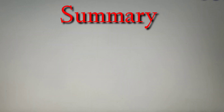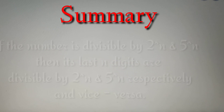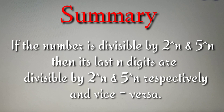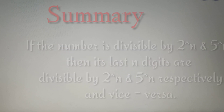Let's do a quick summary of the topics discussed in this video. If a number is divisible by 2 raised to power n or 5 raised to power n respectively, then the last n digits of the number must be a multiple of 2 raised to power n or 5 raised to power n respectively. We only need to check the last n digits of the number to verify divisibility.